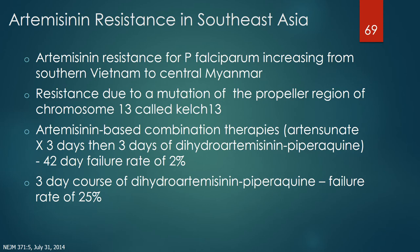Artemisinin compounds are major drugs used to treat Plasmodium falciparum infections, including severe disease. Artemisinin resistance is increasing across mainland Southeast Asia, mainly from southern Vietnam to central Myanmar, due to mutation of the propeller region of chromosome 13 called Kelch 13. Prolonged courses of artemisinin-based combination therapies — 8×3 days followed by 3 days of dihydroartemisinin-piperaquine — are currently efficacious, with a 42-day failure rate of 2%. A standard 3-day course of dihydroartemisinin-piperaquine had a failure rate of 25%.